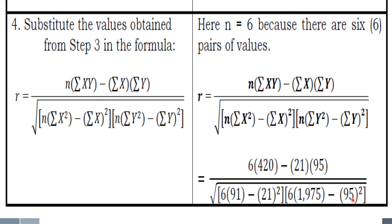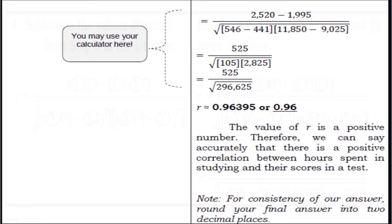Now, if you have your scientific calculator, just put it in your calculator and that will give you the result right away. But if you do not have any scientific calculator that will provide you the easier method, solving this step by step, we have 2,520 minus 1,995, and so on. And then, we will arrive at this.